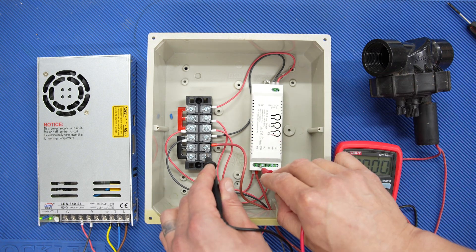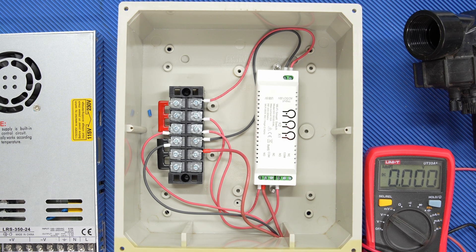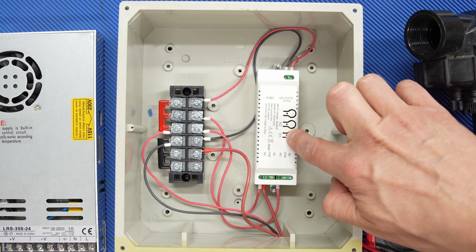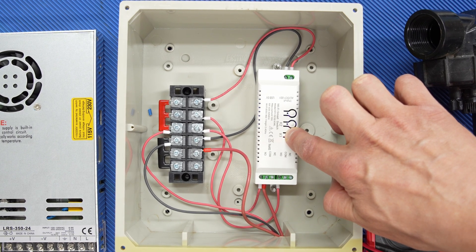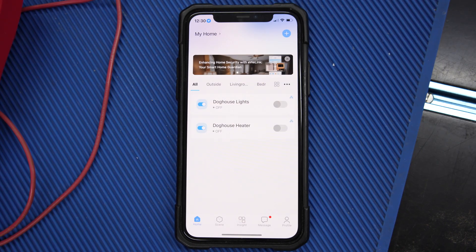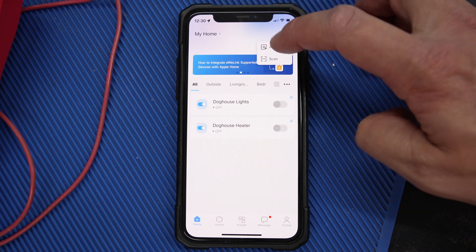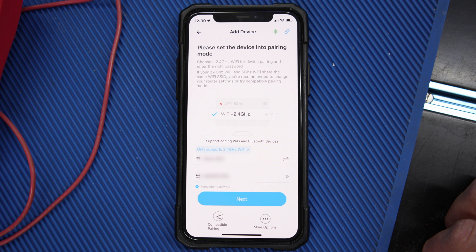With everything working we can now pair the device in the eWeLink app. To pair the device you need to download the eWeLink app and create an account. Once the app is ready press one of the relay buttons for five seconds to switch it into pairing mode, then open the app, tap the plus button on the top right corner and select add device.